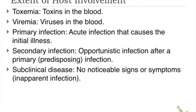Primary infection is the acute infection that causes the initial illness — for example, Wuchereria bancrofti causing elephantiasis. Secondary infection refers to a subsequent infection that develops as a result of the primary one — for example, a wound infection developing from dragging the enlarged scrotum caused by elephantiasis.